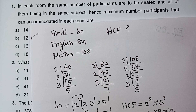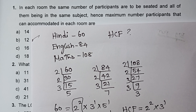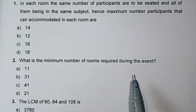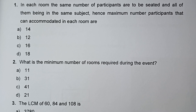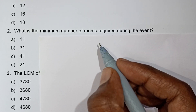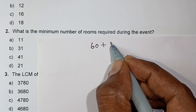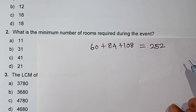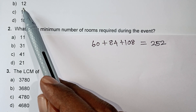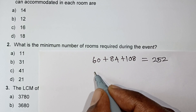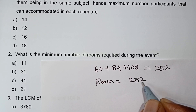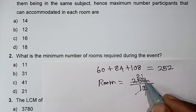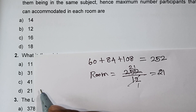Now in all rooms, you can accommodate all the teachers. What is the minimum number of rooms required during the event? If 12 members are required per room and the total number is 252, then how many rooms are required? 252 ÷ 12 = 21 rooms. That is option D.